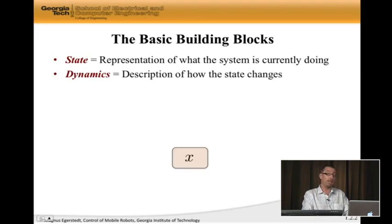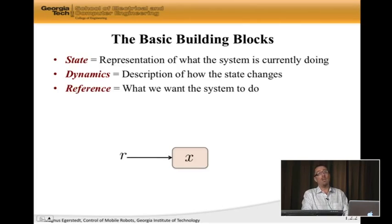What it is actually doing is the dynamics, and the dynamics is the description of the change of the state as a function of time. Now, this is all good, but we want some way of influencing this. So we're going to have a reference signal that we're going to use as a way of telling the system what it is that we want it to do. The reference could be set the cruise controller to 60 miles per hour, or make me a certain amount of money on the stock market, or make the temperature in the room 70 degrees.